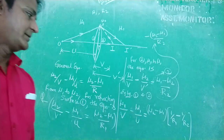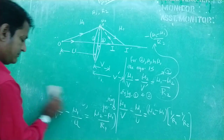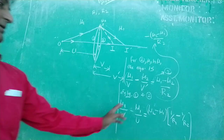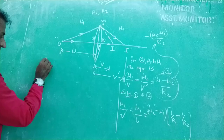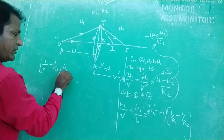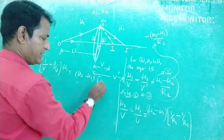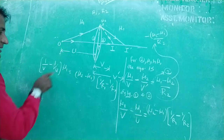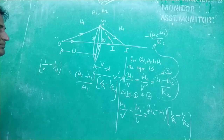Taking (mu2 minus mu1) as a common factor on the right-hand side, and dividing both sides by mu1, we get: 1/V minus 1/U equals (mu2 minus mu1)/mu1 times (1/R1 minus 1/R2).